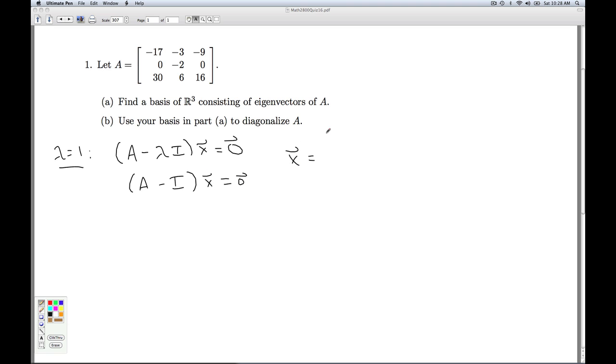So as before, I'm going to let X be my unknowns X1, X2, X3. The augmented matrix I get for this, I'm going to be subtracting 1 off the diagonal. So negative 18, negative 3, negative 9, 0, negative 3, 0, 36, 15. And it's a homogeneous system, so it's a column of zeros there.